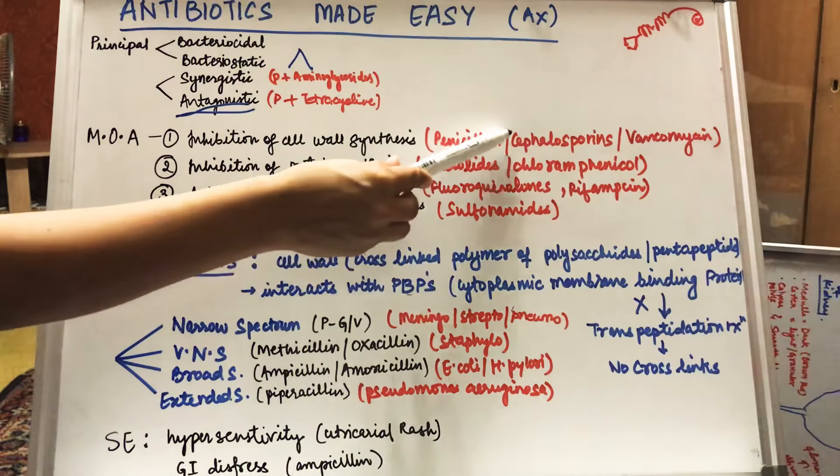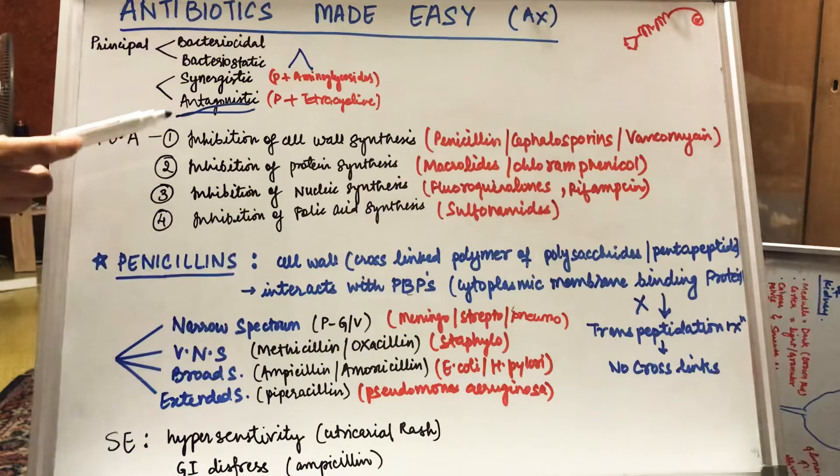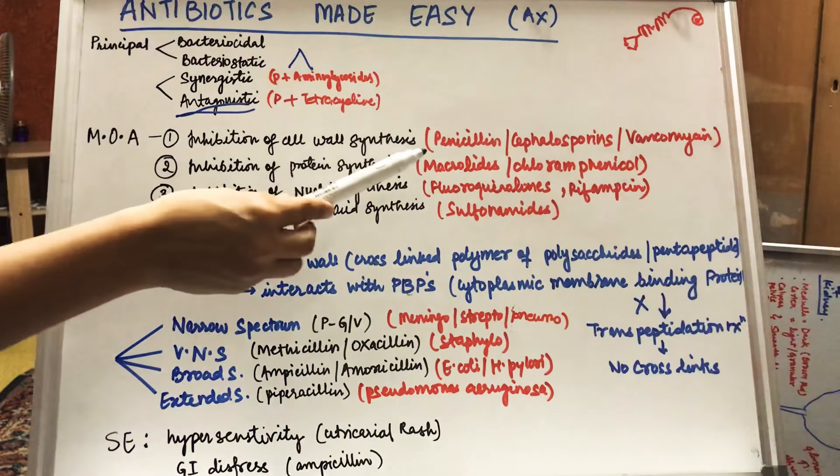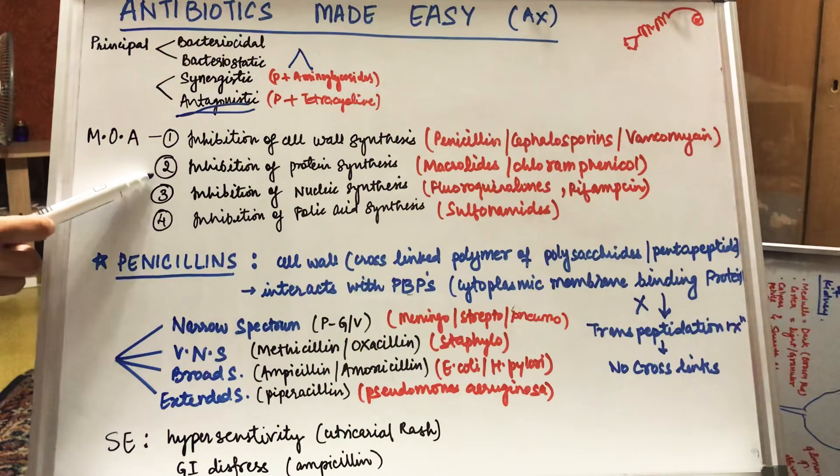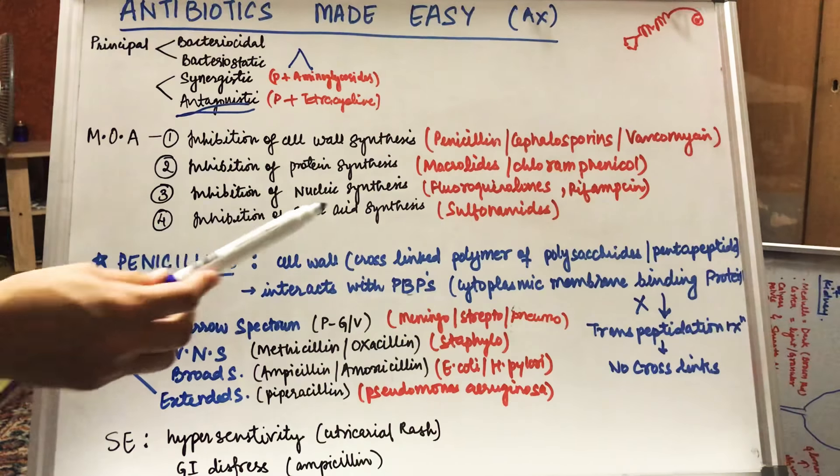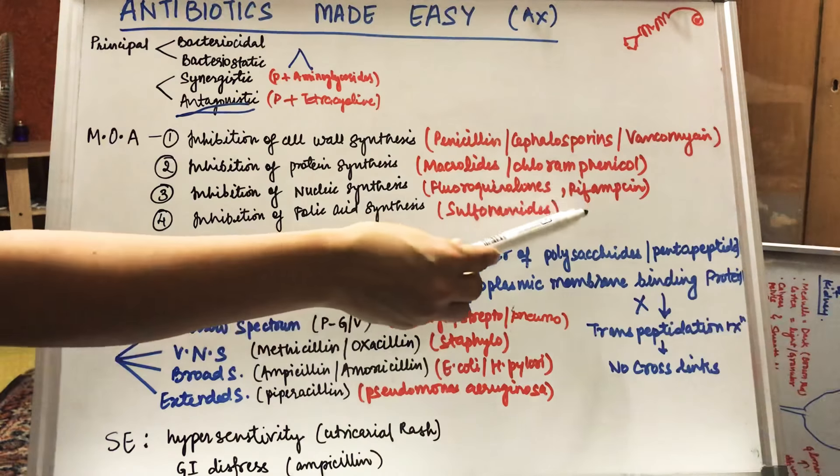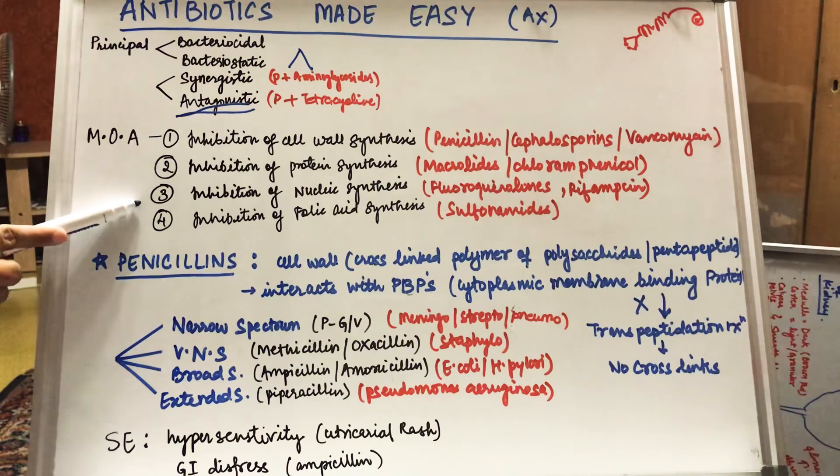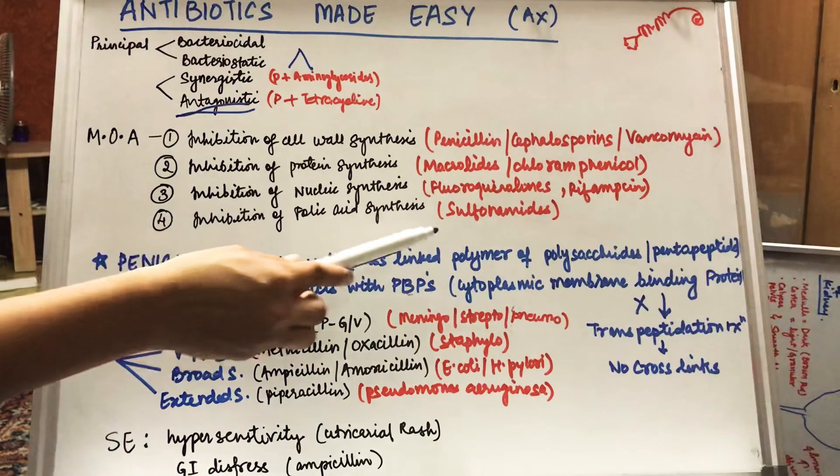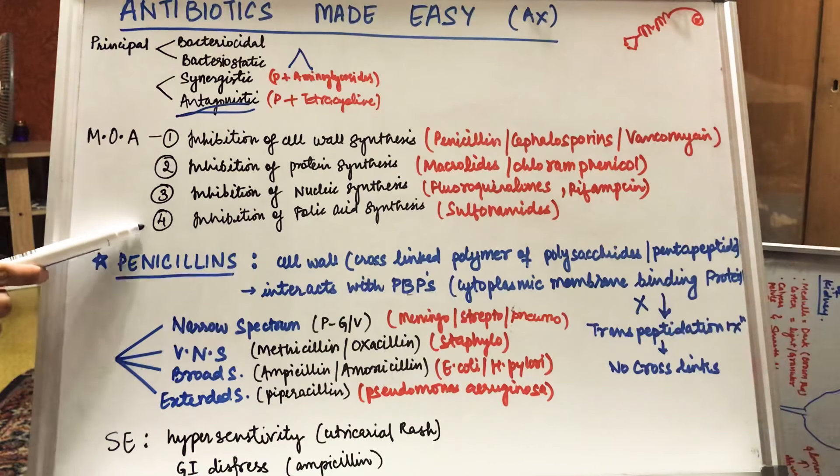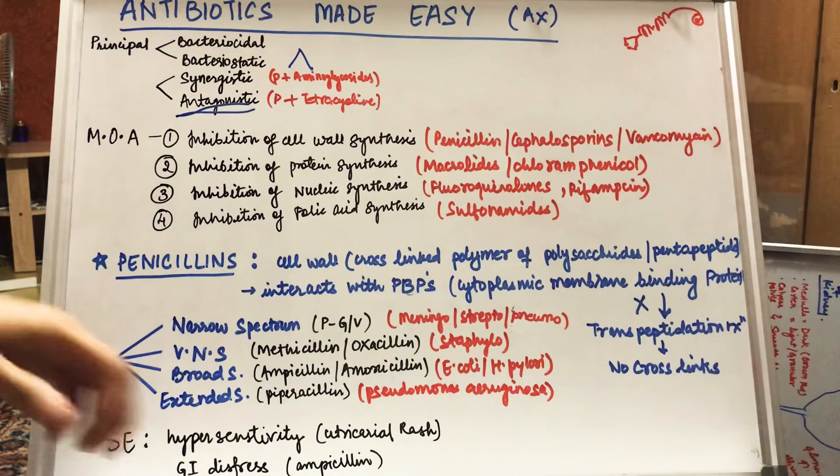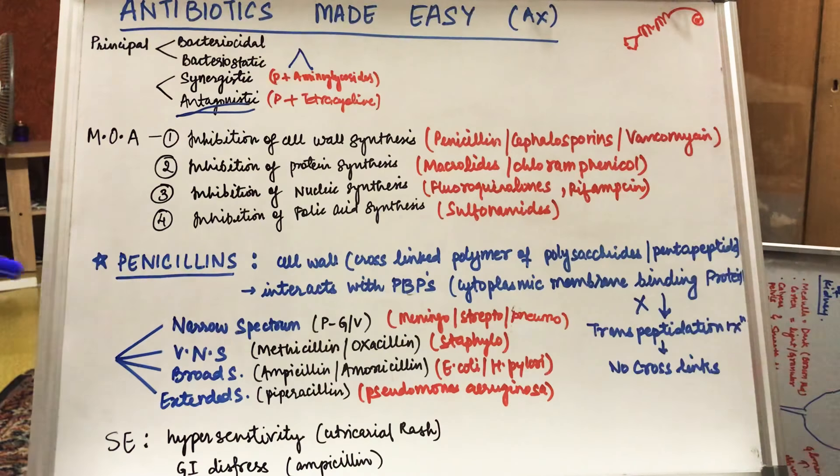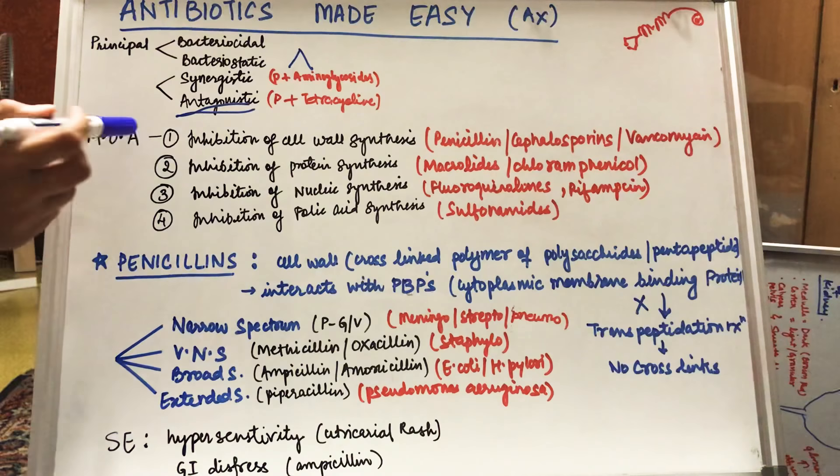There are various drugs which work according to different mechanisms of action. Drugs like penicillin, cephalosporins, and vancomycin work by inhibiting cell wall synthesis. Drugs such as macrolides and chloramphenicol work by inhibiting protein synthesis. Drugs such as fluoroquinolones and famcine work by inhibiting nucleic synthesis. Drugs such as sulfonamides work by inhibiting folic acid synthesis. I'll explain about this in further videos.